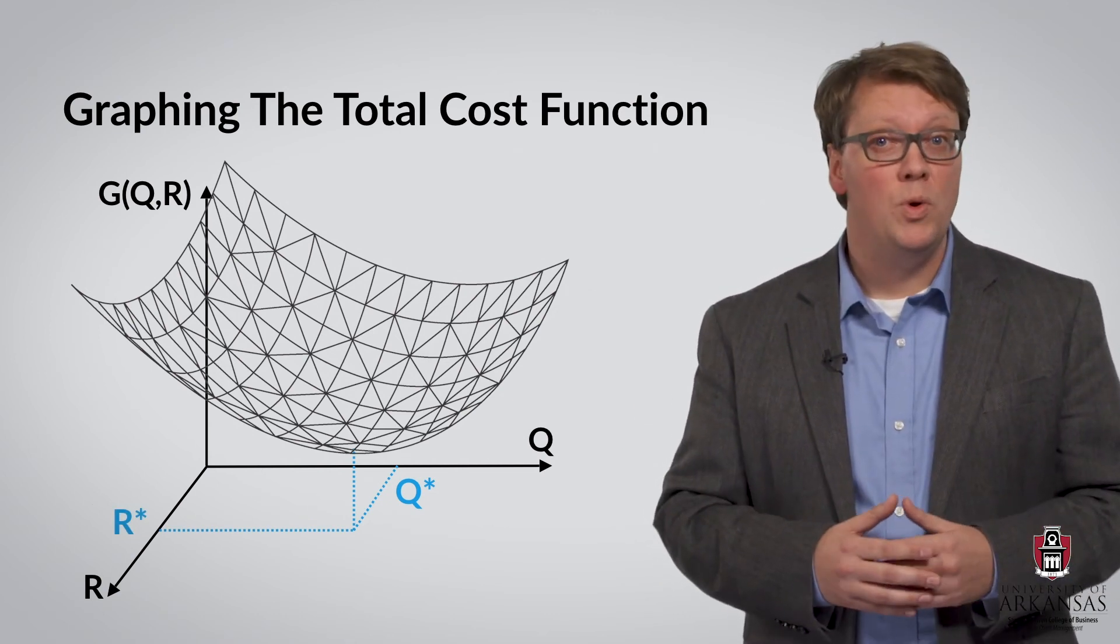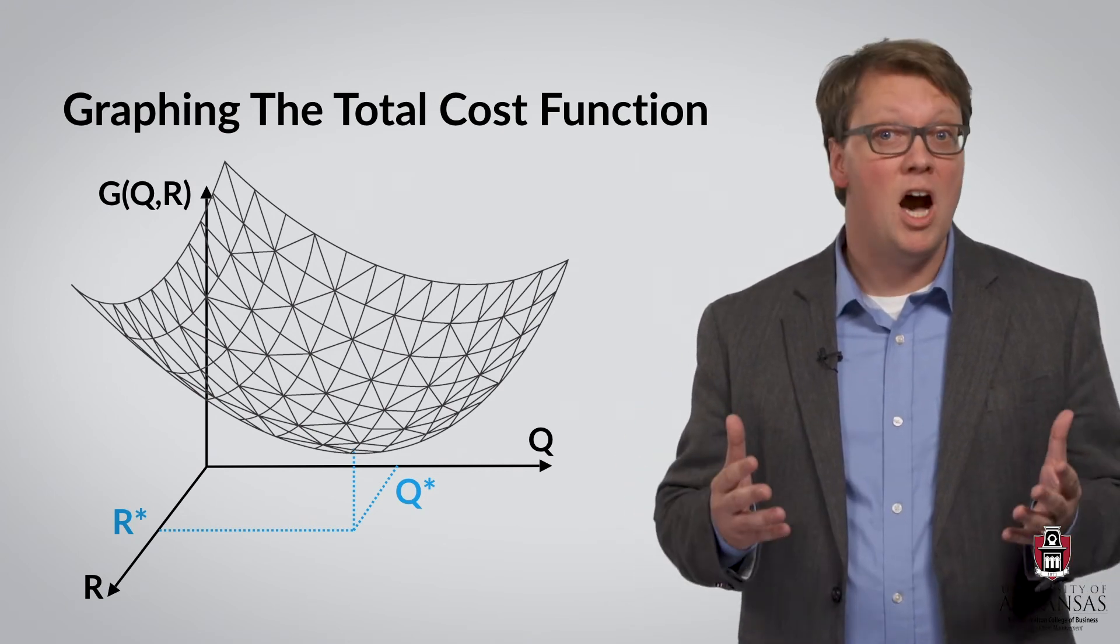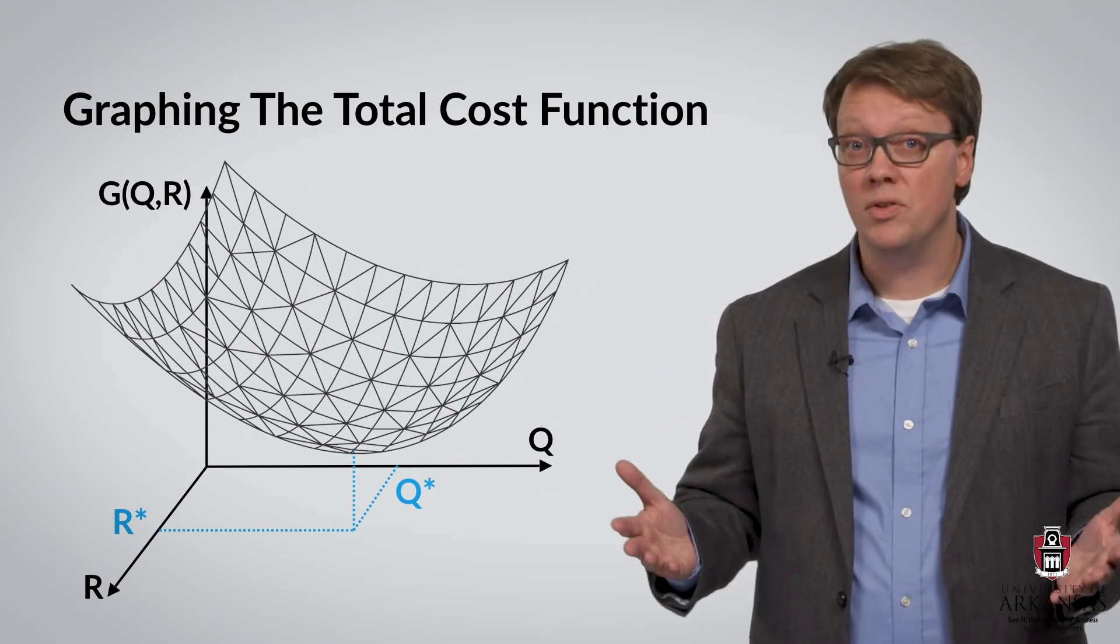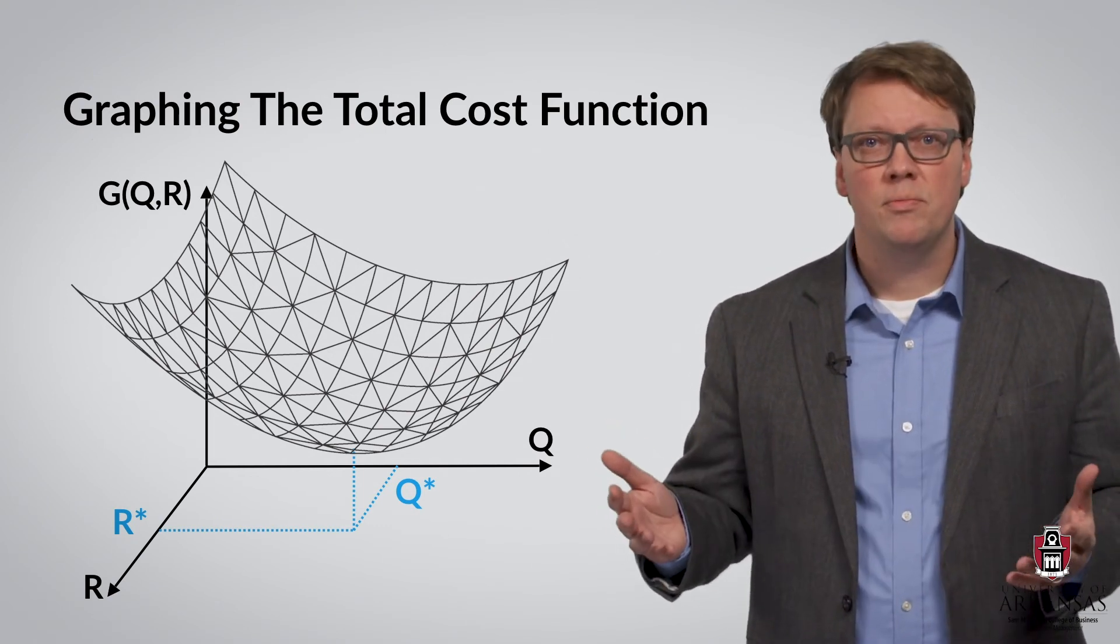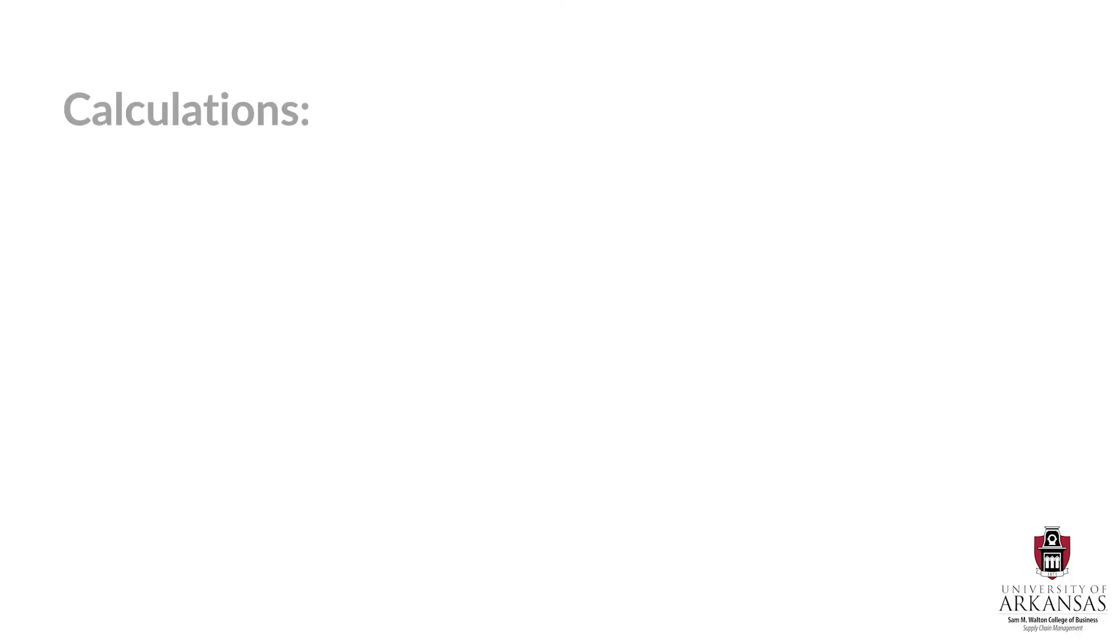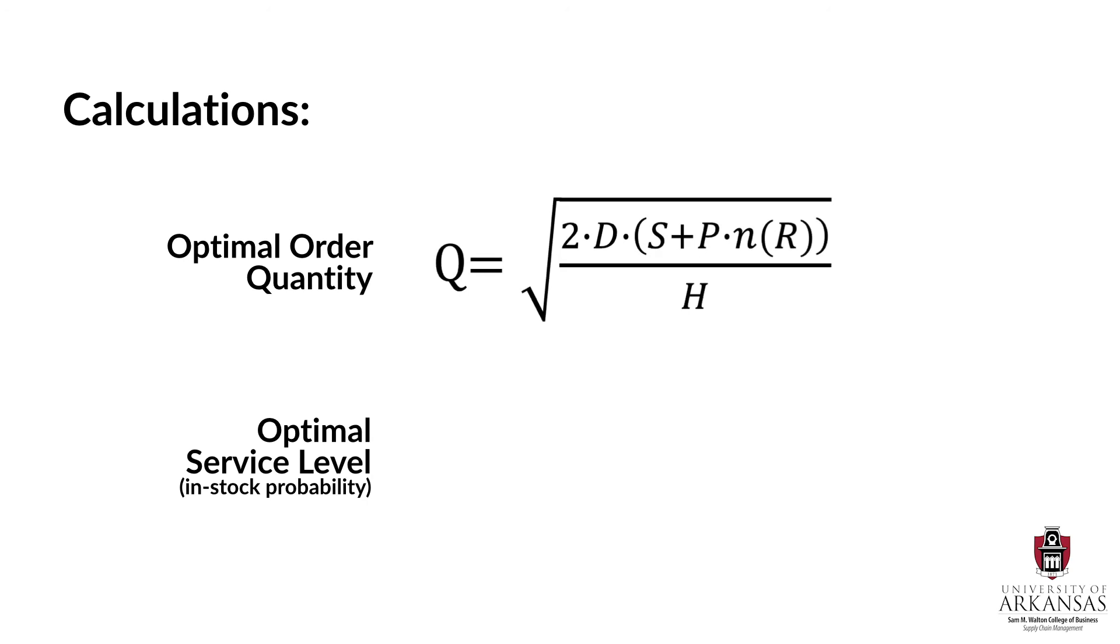The obvious question then is, how do we determine the optimal order quantity and reorder point levels? To answer this question, we will need to take some derivatives. But the good news is, we will skip the math and jump right ahead and look at the optimal order quantity and optimal in-stock probability formulas. Let's look at Q first. As you can see, this looks very similar to the basic EOQ. The only difference is that we are now also considering stock out costs in addition to holding and ordering costs.